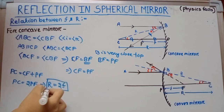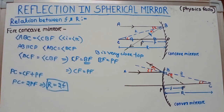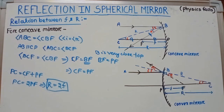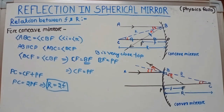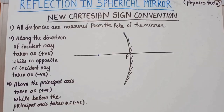Similarly, we can determine the relation between focal length and radius of curvature for the convex mirror. In case of a convex mirror, the ray is deviated but appears to come from the focus. Join CB as the normal — the procedure for the convex mirror is similar to that of the concave mirror. Students, you may all try it.